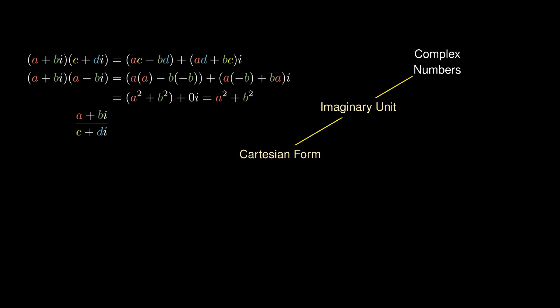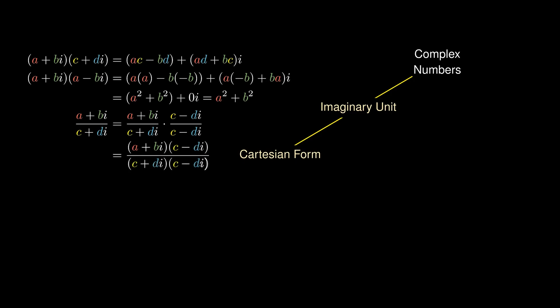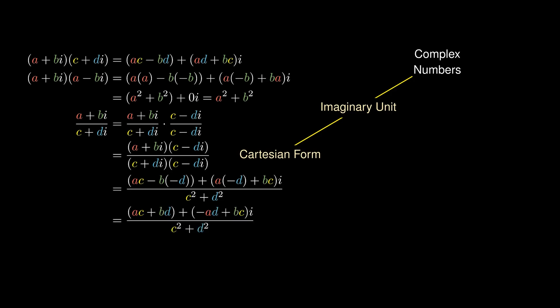Since the denominator here is c + di, the trick is to multiply the fraction by (c - di)/(c - di). We can combine using complex number multiplication: the numerator simplifies by the usual rules, while the denominator simplifies to c² + d², which is just a real number. We can simplify the expression further to obtain another complex number.